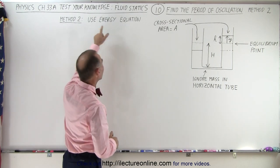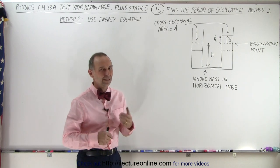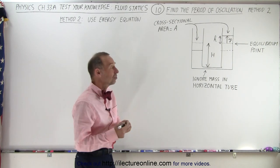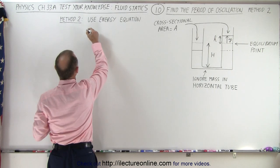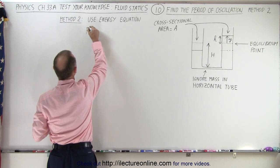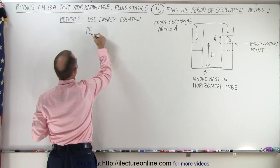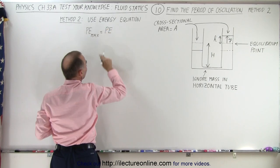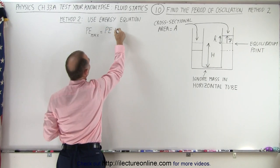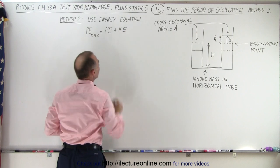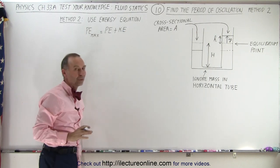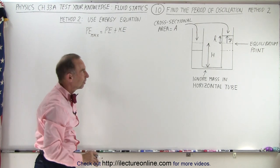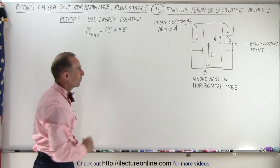We're going to use the energy equation that has to do with potential and kinetic energy. Essentially, what we want to get is that the potential energy max that we start with is going to be equal to the potential energy at any point in time plus the kinetic energy at any point in time. So we need to find these three components of the equation in order to find the period of oscillation.